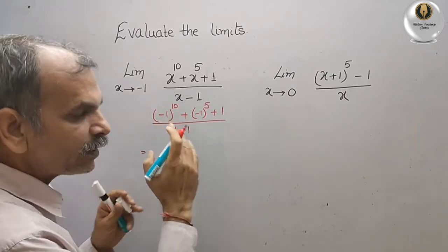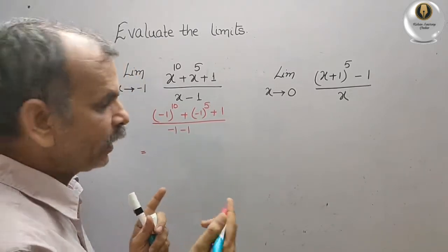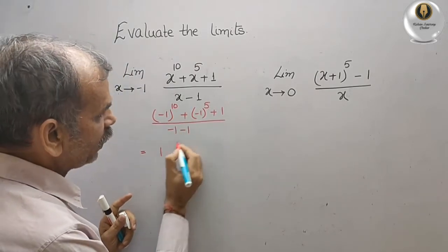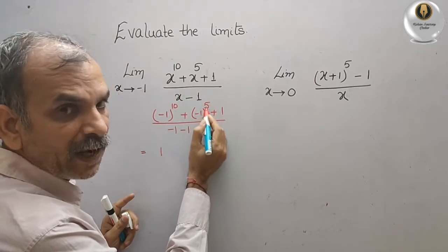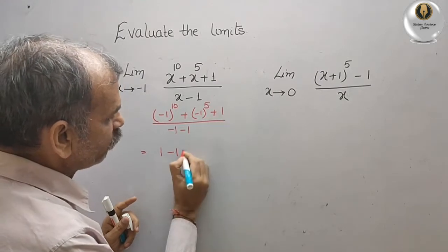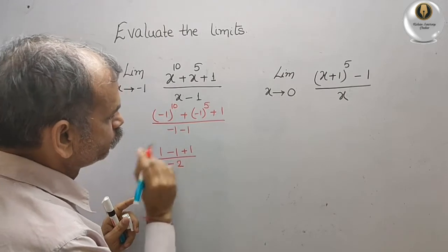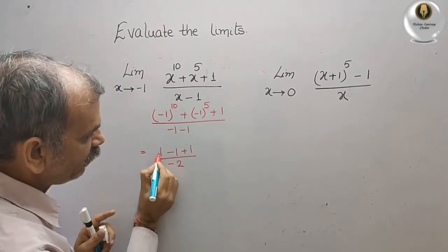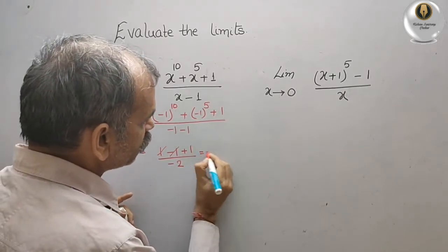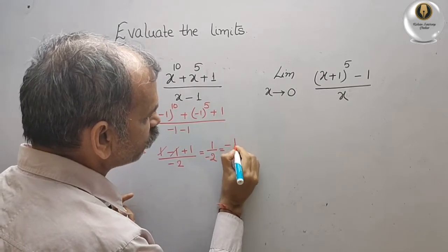Minus 1 to the power of 10 gives plus 1, since 10 is an even number. Minus 1 to the power of 5 gives minus 1. So we have 1 minus 1 plus 1, divided by minus 2. The 1 and minus 1 cancel, leaving 1 divided by minus 2, which equals minus 1 by 2.